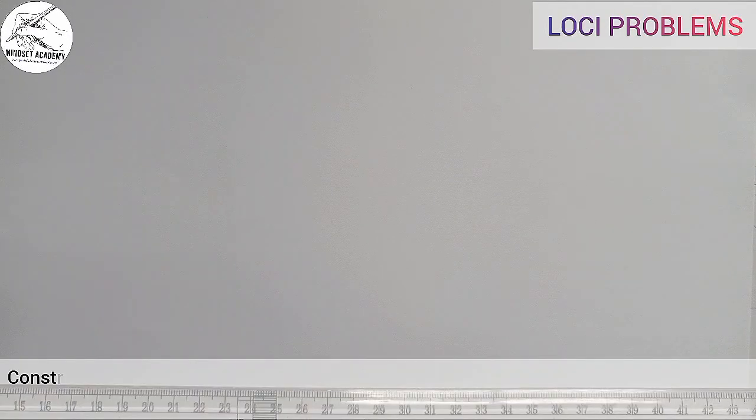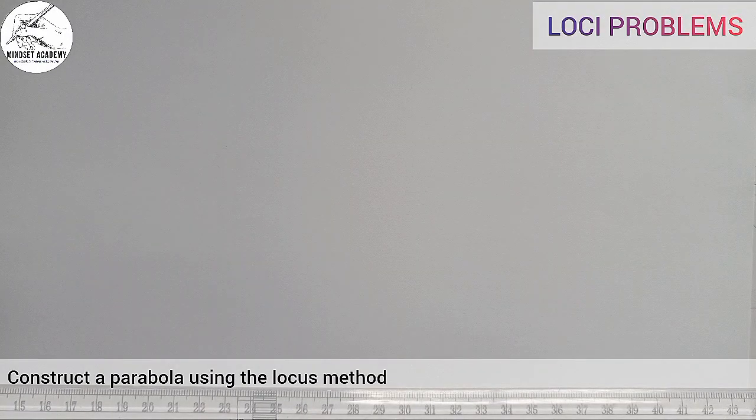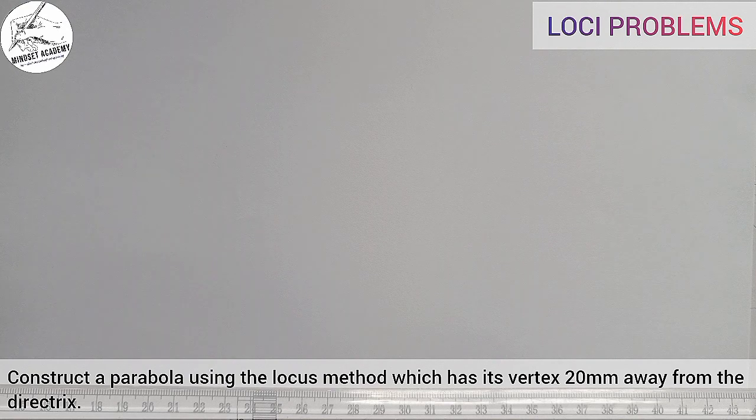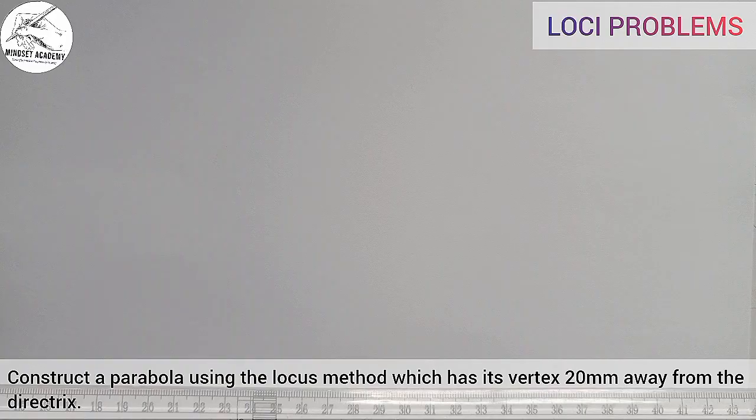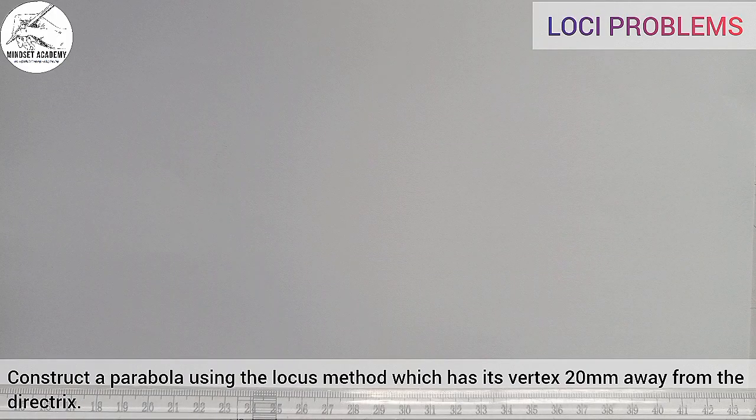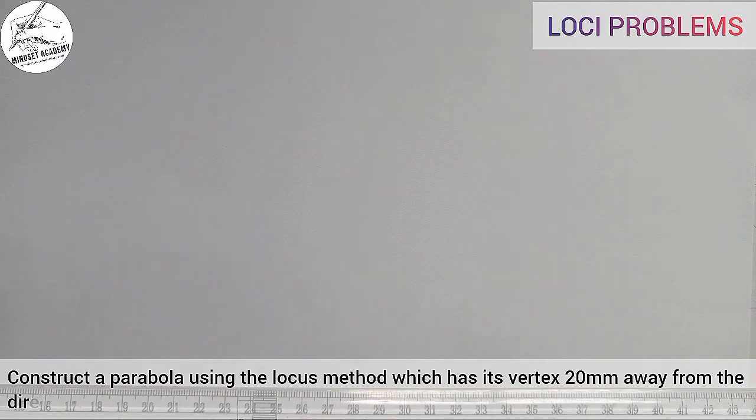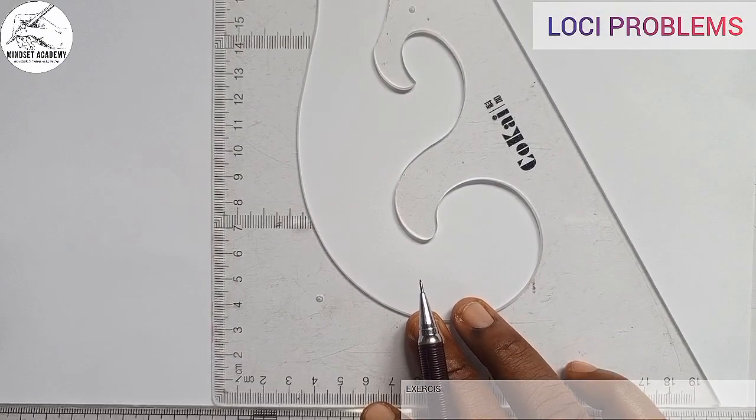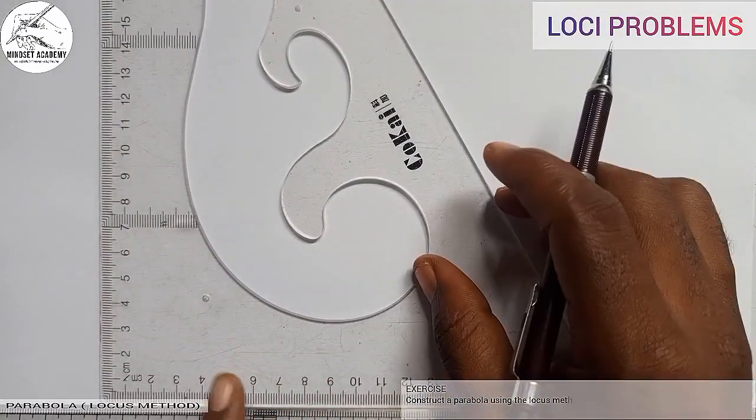The question says construct a parabola using the locus method which has its vertex 20 millimeters from the directrix. So the first thing you are going to do is draw your vertical line, and this vertical line will be representing your directrix.